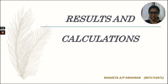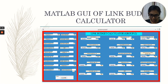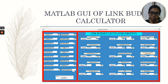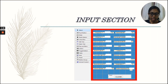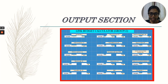My name is Ranjitha Krishnan and I will be presenting the results and calculations for the link budget calculator using MATLAB GUI. This is the calculator that we have created. First, a blank GUI template is opened, and from there each button is created for all the required parameters. A clear button is also created so that any values can be cleared in order to recalculate or if any error occurs. This is the input section where all parameters are entered to obtain the output. All the parameters calculated are consistent with the manual calculations that we have done.